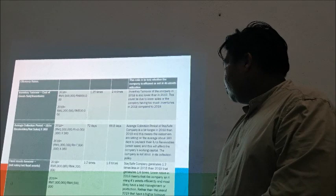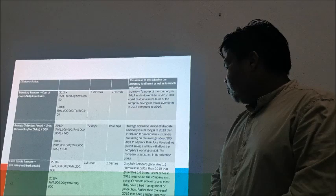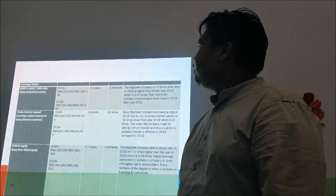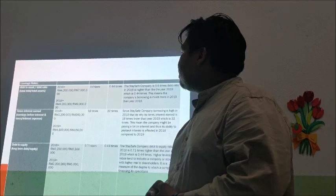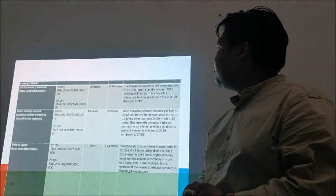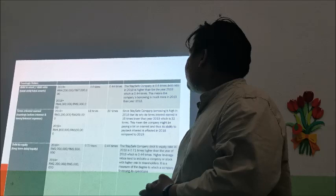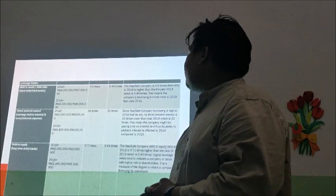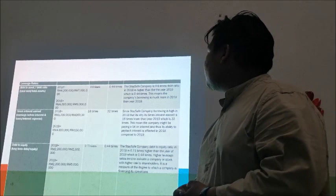Overall, the efficiency ratios in 2018 mean that the company was efficient and they had an impact on production. For the debt ratio, we got 0.6 times in 2018 and 0.44 times in 2019. The debt ratio in 2018 is 0.6 times, which is 0.24 times higher than in 2019, which may continue to show improvement between 2019 and 2018.